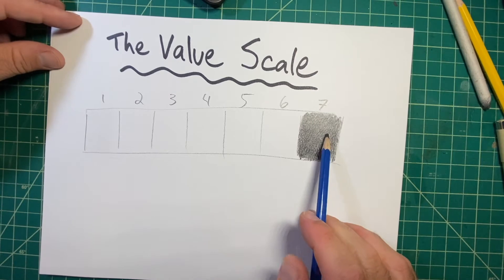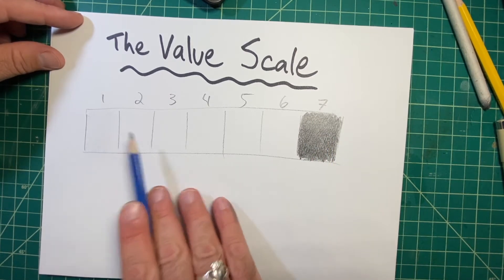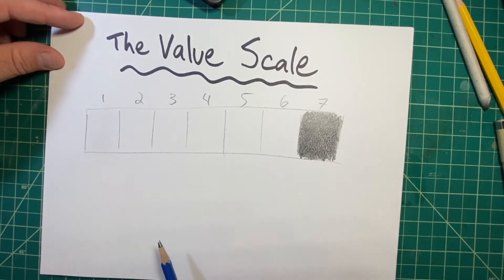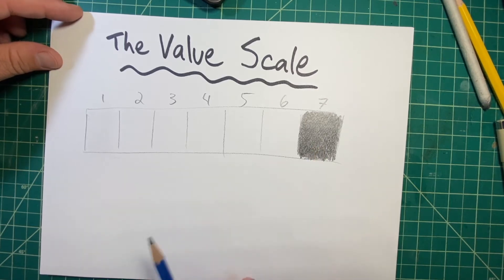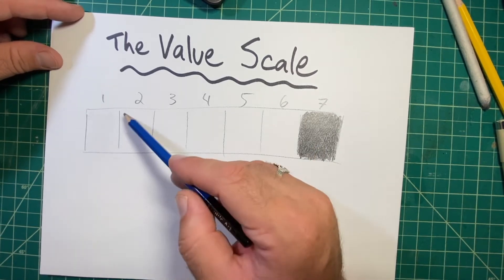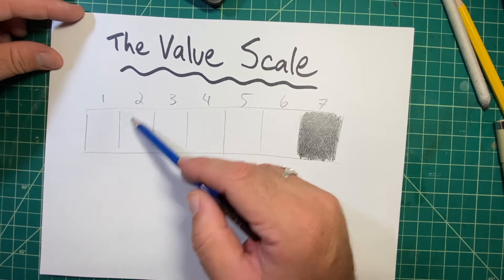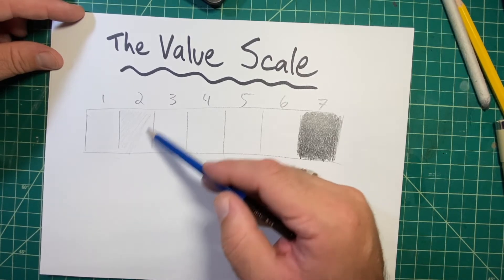So from seven to one, I want to have multiple shades of gray, each one slightly different from the last. So if I start with two, I'm going to go over it really light. I'm barely pressing. I'm not putting that much pressure at all on it.